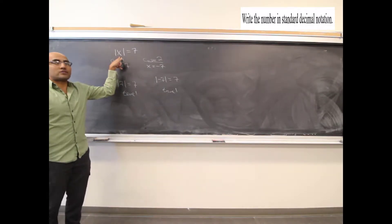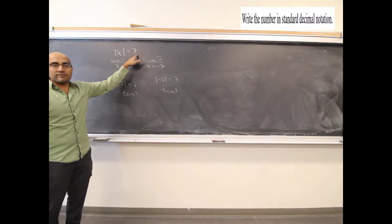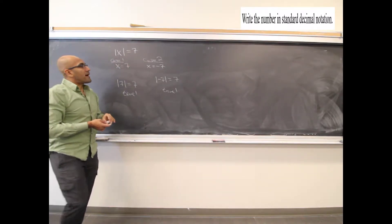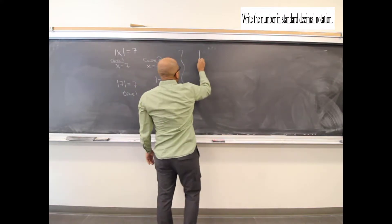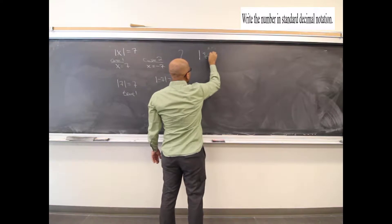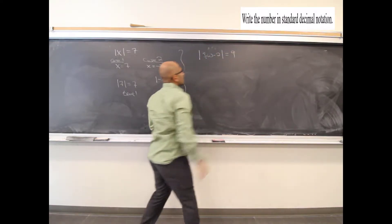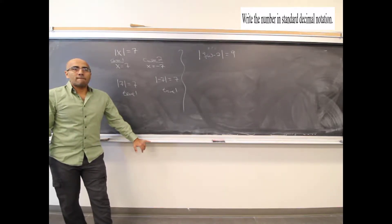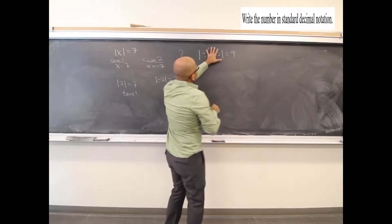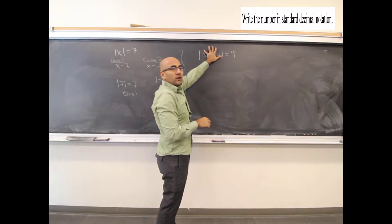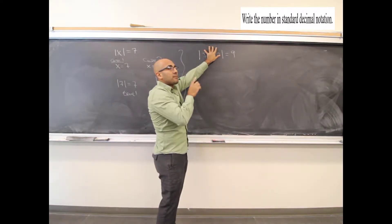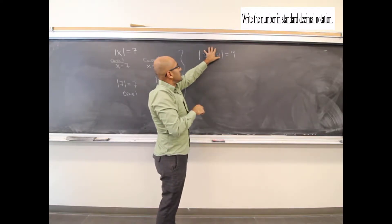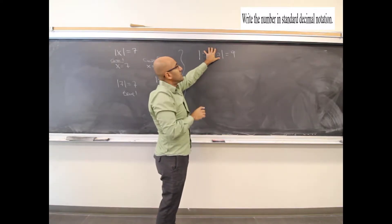This is one of the cases we'll run into: an absolute value equal to a positive number. By the way, can an absolute value ever equal a negative? No — the answer always has to be positive. For a more complex case like the absolute value of 3w minus 2 equals 9, think of whatever is inside as one single thing. If it's positive 9 that's one solution; if it's negative 9, that's another solution.